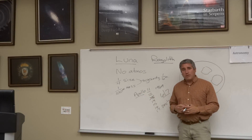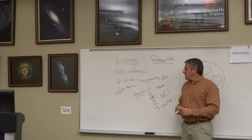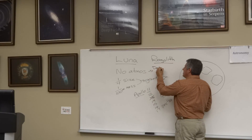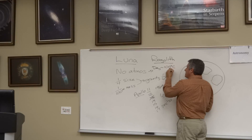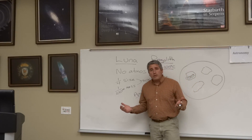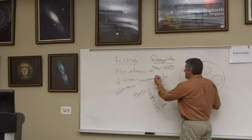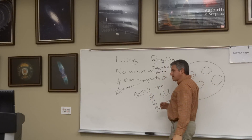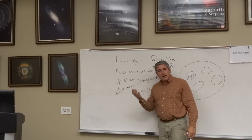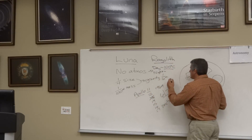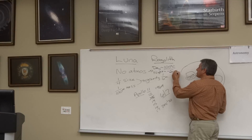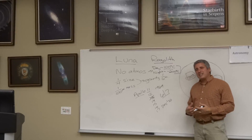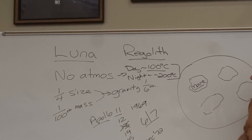They eventually realized that the moon had no atmosphere, with conditions that couldn't allow for liquid water. The lack of an atmosphere means that daytime temperatures on the moon are in excess of 100 degrees Celsius — hot enough to boil water. Yet when night sets on the moon, after about two weeks, temperatures plummet to minus 200 degrees Celsius, so temperature variations are extreme: from 100 degrees Celsius during the day to negative 200 at night.